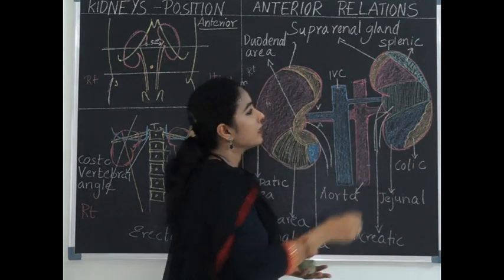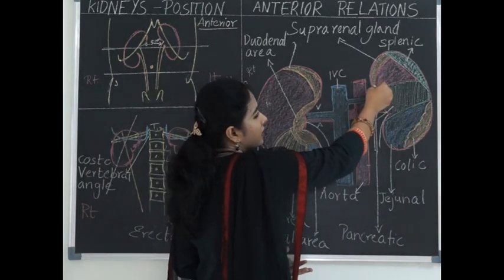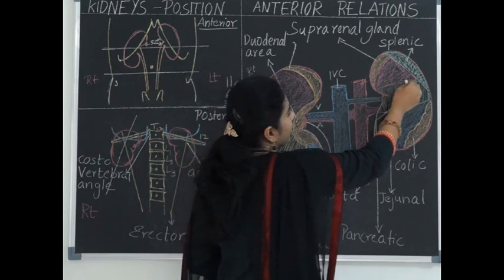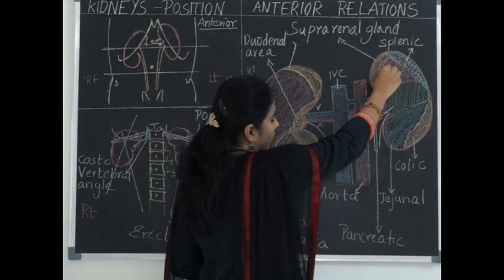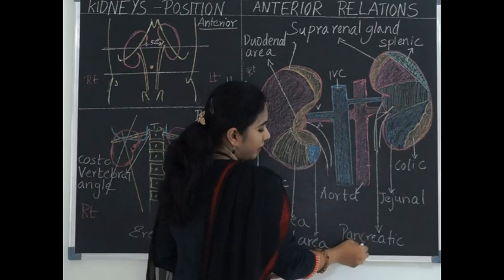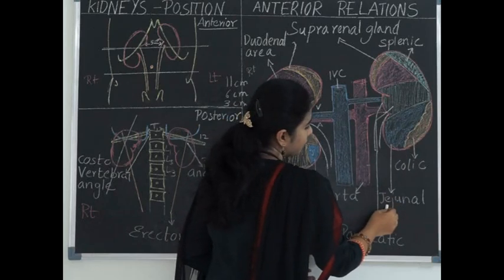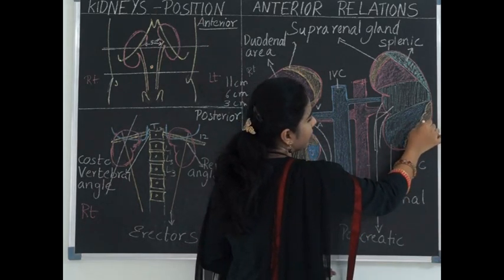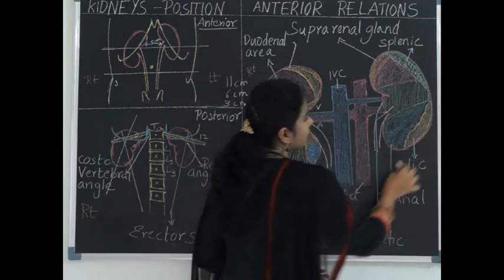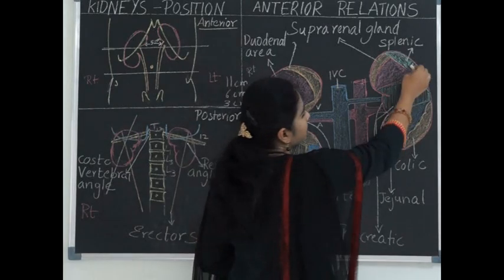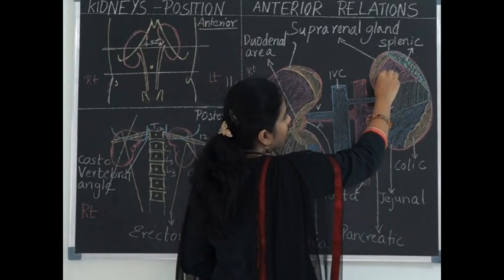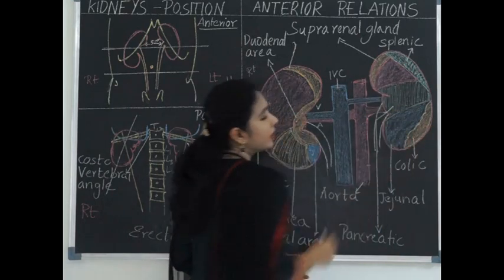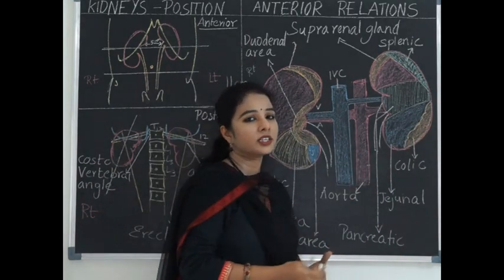For the anterior relations of the left kidney: it is related to the suprarenal gland medially, the splenic area superolaterally, the gastric area where the stomach is related, the pancreatic area, the jejunal area with coils of small intestine, and the colic area where the splenic flexure of the colon is related. On the left side, the splenic area, gastric area, and jejunal area are covered by peritoneum; the rest of the areas are devoid of peritoneum.